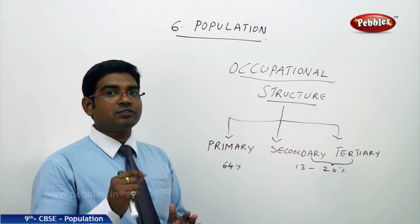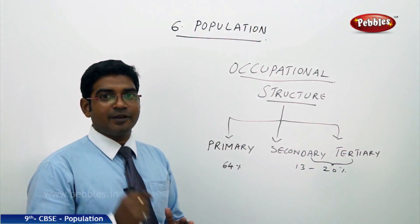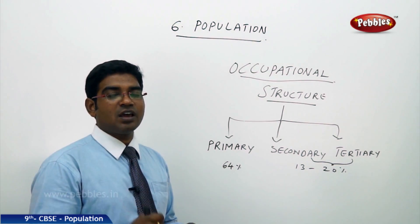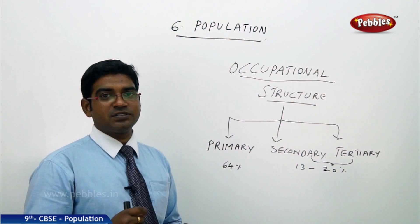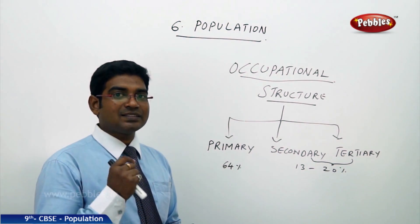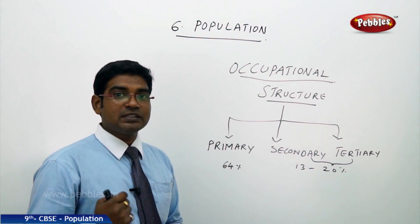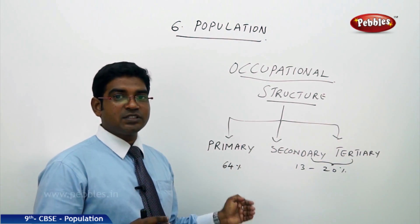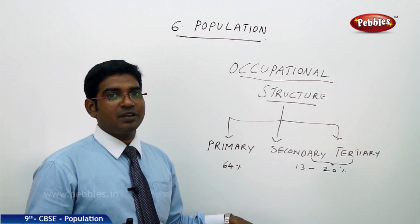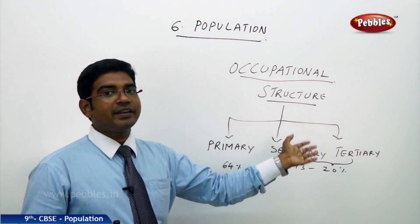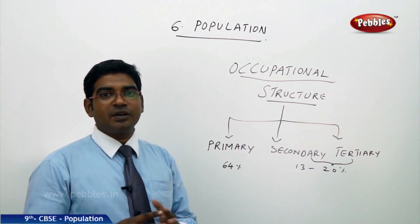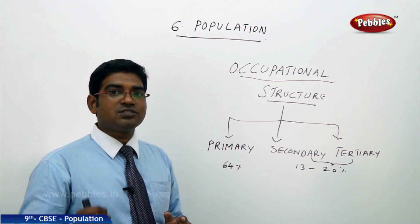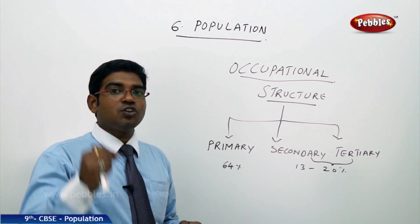For example, in the United States of America, only three to five percent of people work in the primary sector, while the rest work in the secondary or tertiary sector. In contrast, India has 65 to 70 percent of people working under the primary sector, whereas the secondary and tertiary sectors comprise only 20 to 30 percent. That is why the USA is a developed nation while India is still a developing country.